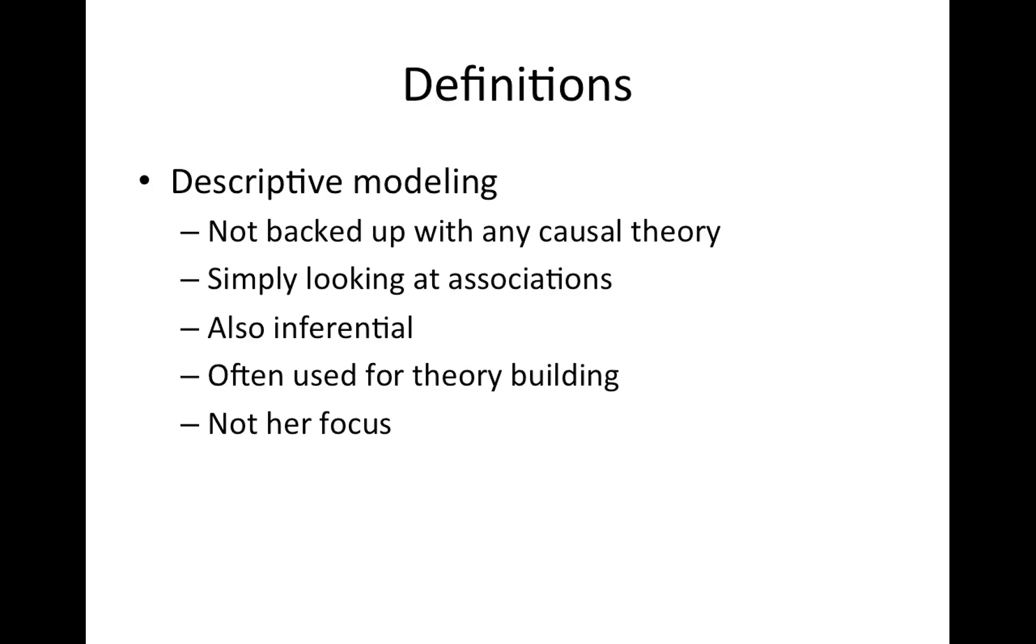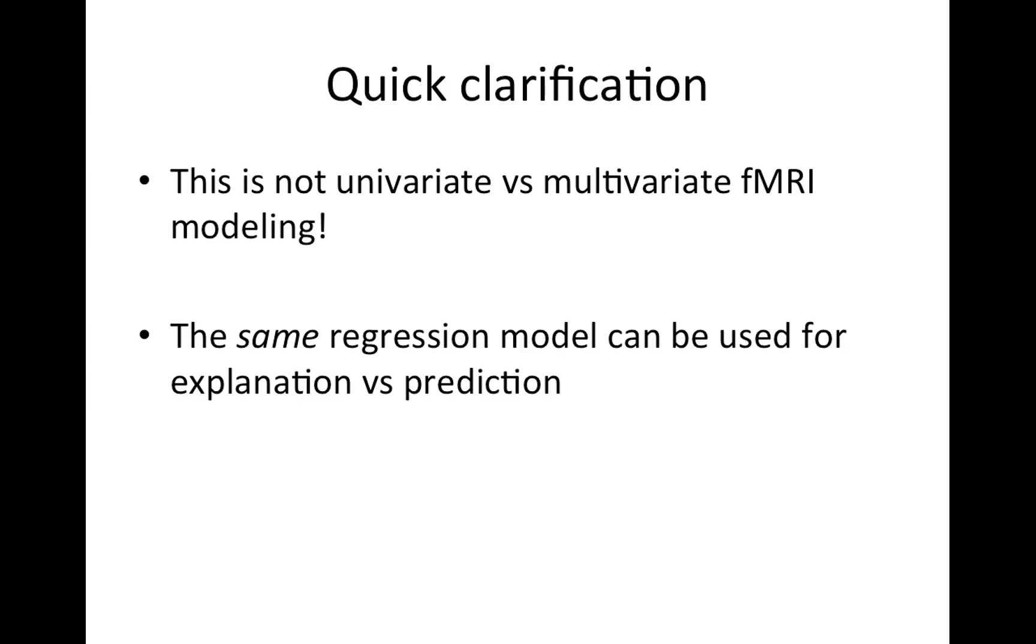Just a quick clarification: you might be thinking that I'm talking about the difference between univariate modeling - say in an fMRI study you run your voxel-wise analysis versus pattern classifiers - but those are not the two things I'm differentiating here. I'm referring to using the same regression model for explanation versus prediction.